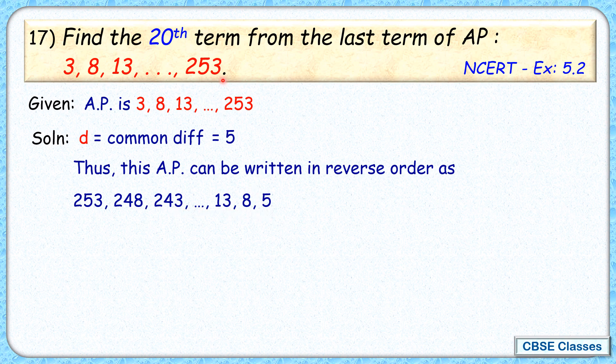Now this series written in reverse is also an AP, but this time the common difference is not 5, but it's a reducing AP, so common difference is minus 5. And for this AP, your first term is 253, common difference is minus 5.